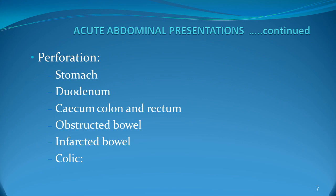In cecal carcinoma, the patient will have a history of anaemia. In rectal carcinoma, the patient will have altered bowel habit and history of bleeding per rectum. In obstruction of the bowel, they will present with distension of the abdomen. In infarction of the bowel, the patient will be an arteriopath, may be on anti-hypertensive medications, and may be a diabetic patient.